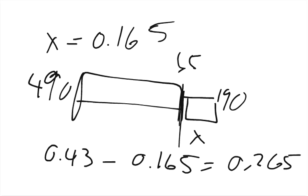One last thing about Part A — it asks for the direction. When the 65 kg object is directly in the middle, the net force goes toward the heavier, more massive object. So the direction is toward the 490 kilogram mass.